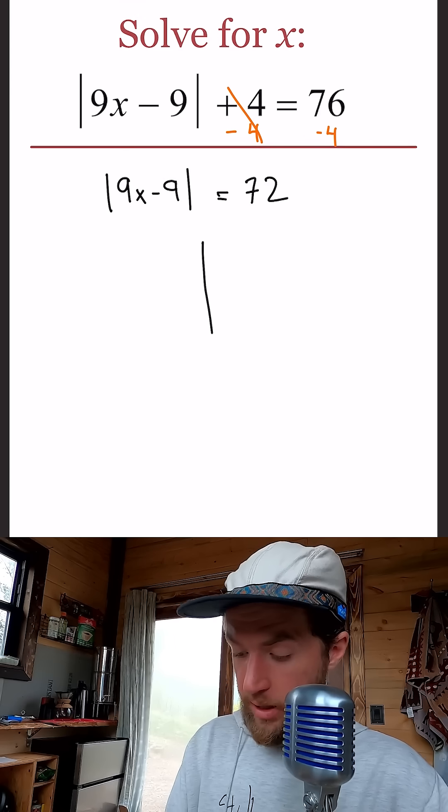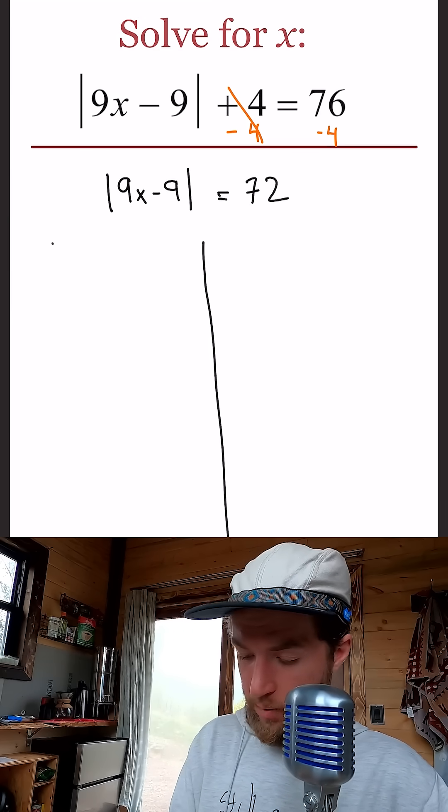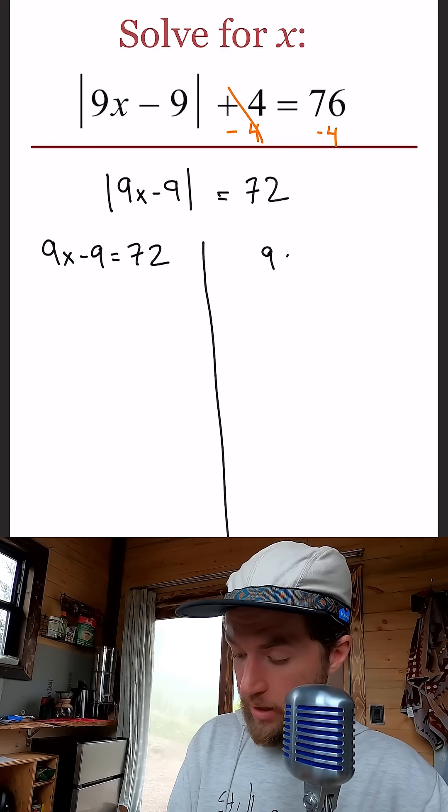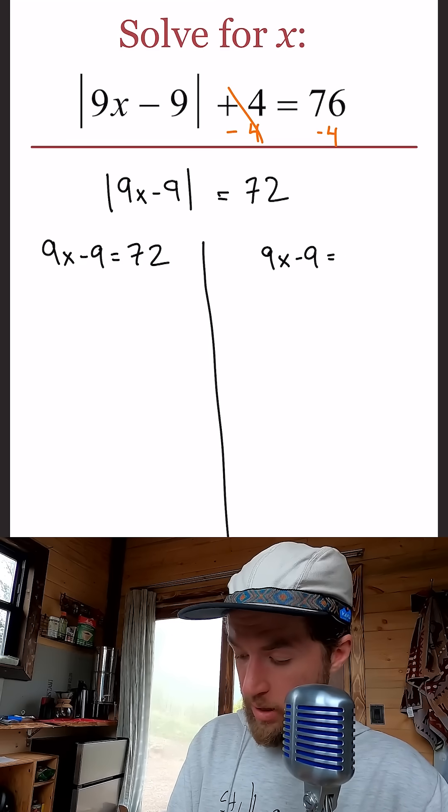So we'll set up our two cases here and make a little line. We're going to do 9x minus 9 equals positive 72, and 9x minus 9 equals negative 72.